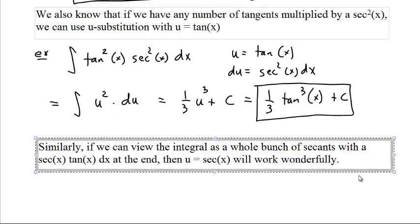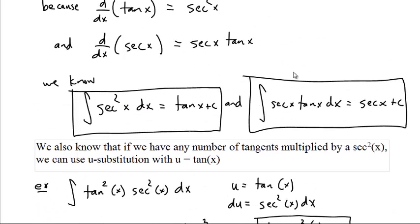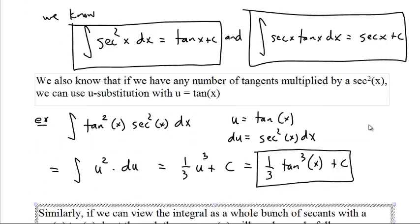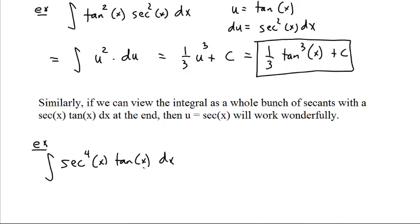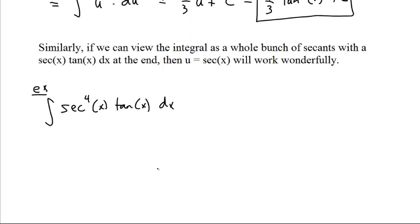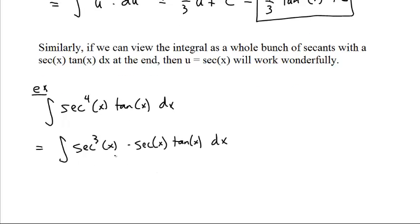Similarly, if the integral is a whole bunch of secants with a secant x tangent x at the end, then u equals secant of x will work. Let's do an example with four secants and a tangent. We look at this as three secants and then a secant x tangent x.